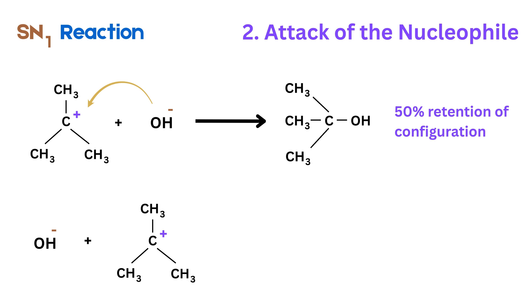Meaning half of the original shape is retained. If it attacks from the opposite side, we say 50 percent inversion of configuration, meaning the shape is flipped. Thus, SN1 reactions produce a mixture of both retained and inverted products, often giving a racemic mixture.